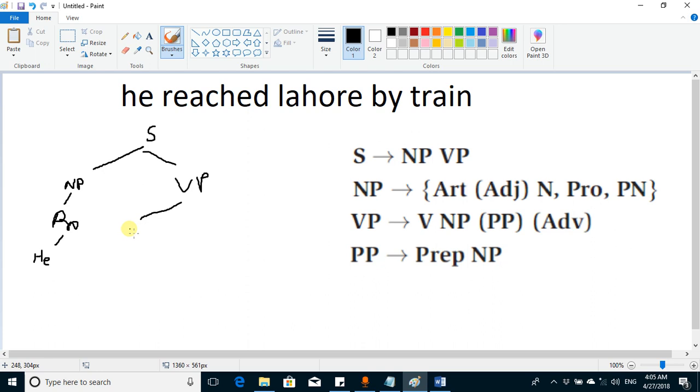'Reached' next. So this is a verb phrase. It has this production rule: it goes to verb followed by again noun phrase, followed by optional prepositional phrase and followed by optional adverb. So in this case we look for the verb.